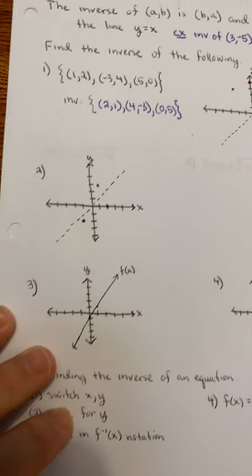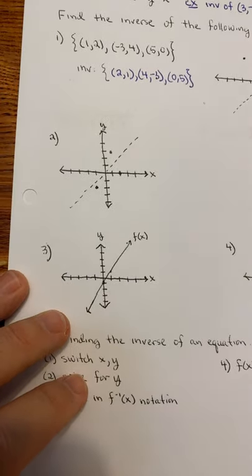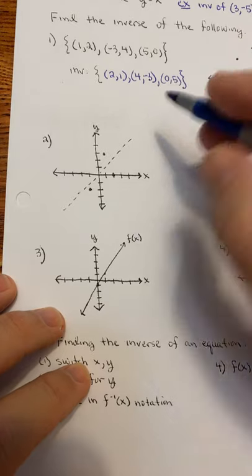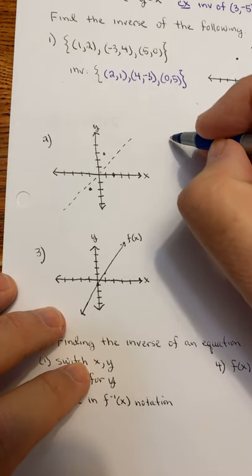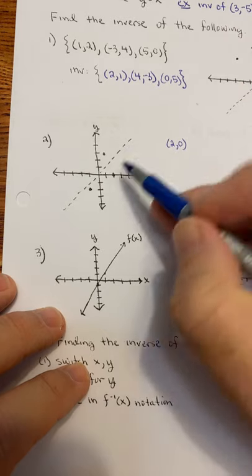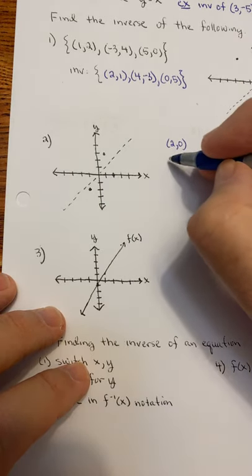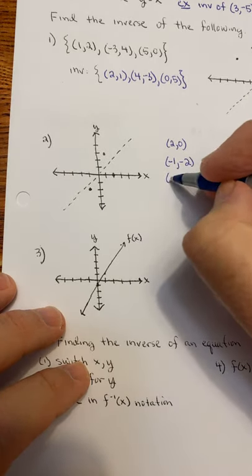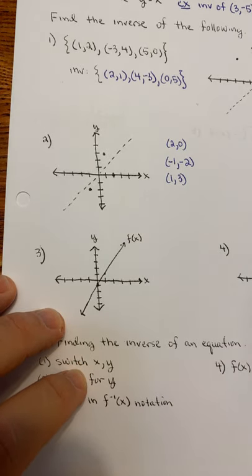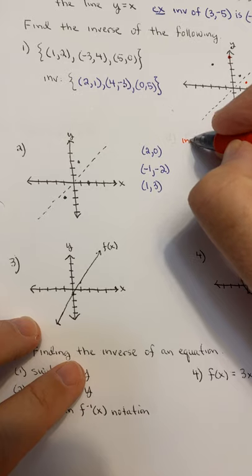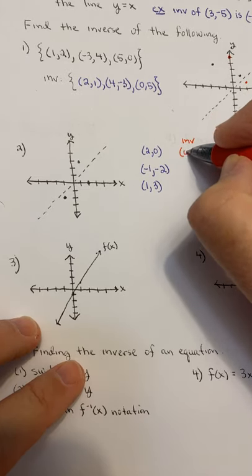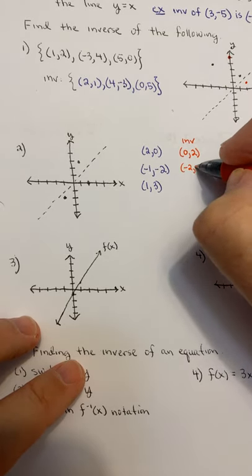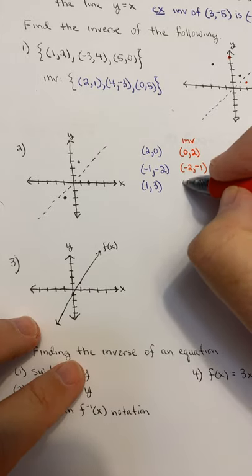Given a set of ordered pairs, you can find the inverse. Here I'm given some ordered pairs. The original ones are (2, 0), (-1, -2), and (1, 3). To find the inverses, we just switch the x and y. The inverse of (2, 0) is (0, 2). The inverse of (-1, -2) is (-2, -1). And the inverse of (1, 3) is (3, 1).